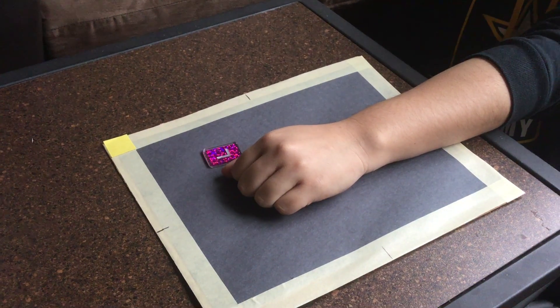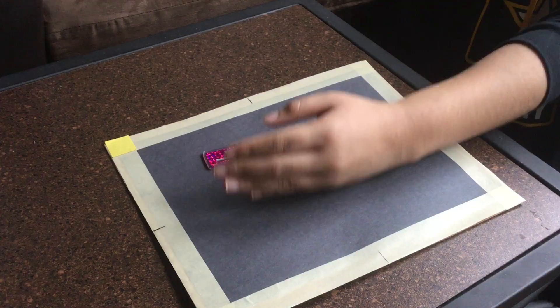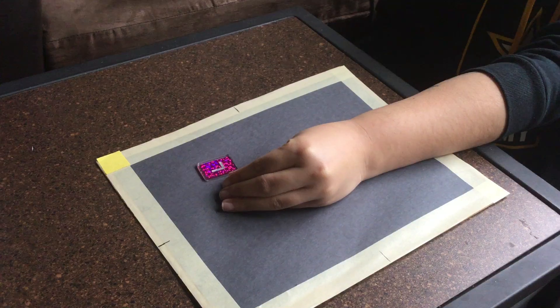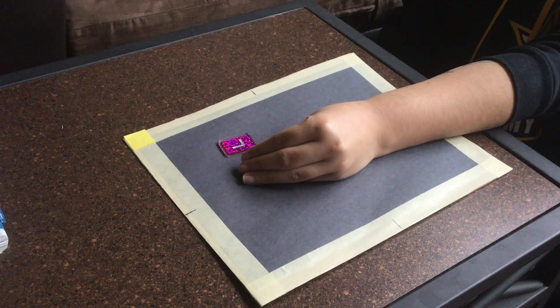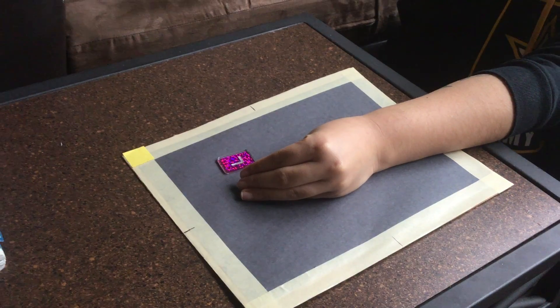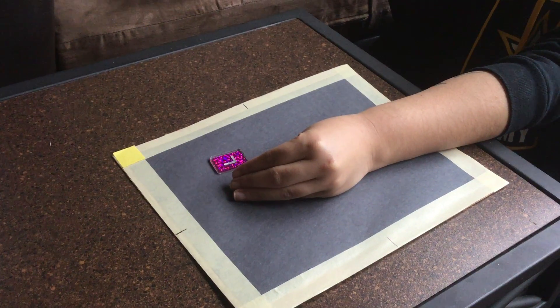So now we're going to be doing the oblique wrist. We're going to place our hand like this. So the central ray is going to be going through the distal radius and the collimation is going to be around the carpals.